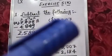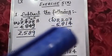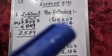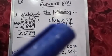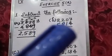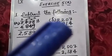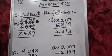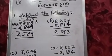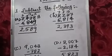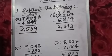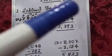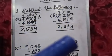Now next is 0. 0 minus 1, we can't minus 0 from 1, so here we need to take borrow. We will take borrow from 2 and the 0 will become 10. So 10 minus 1 is 9.